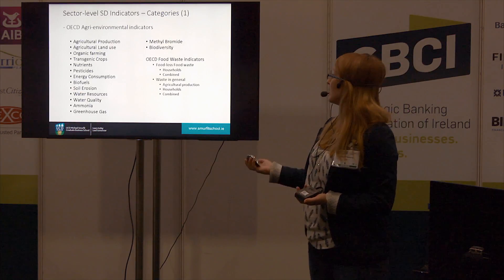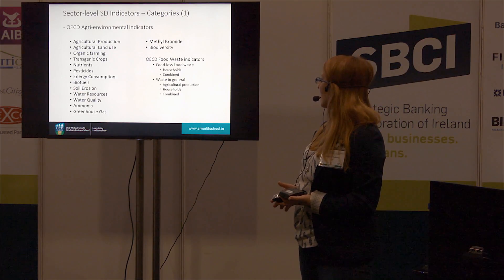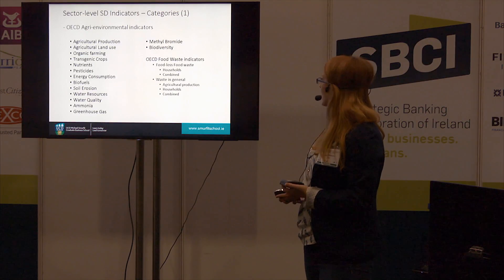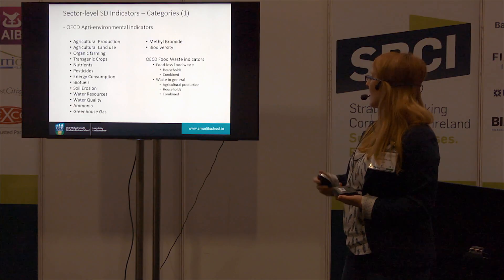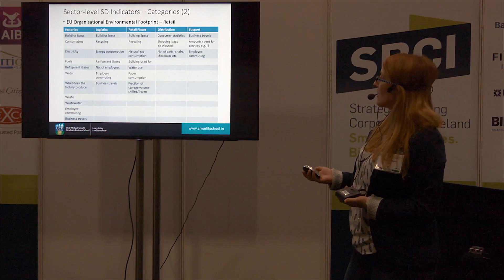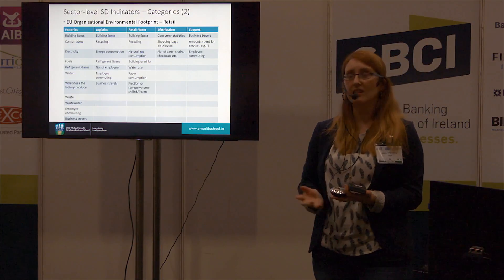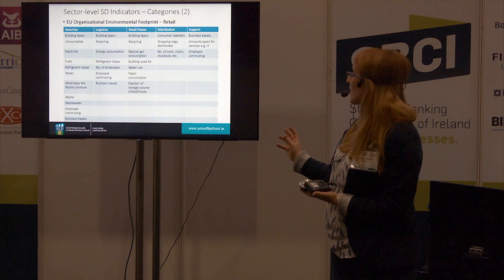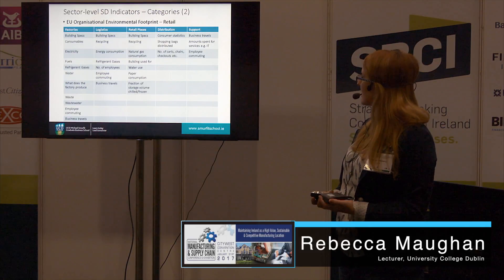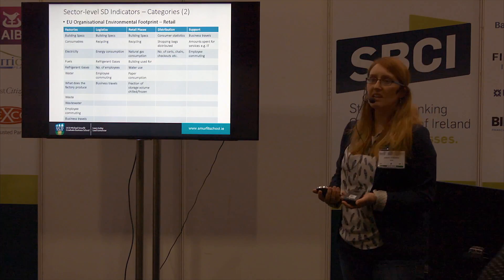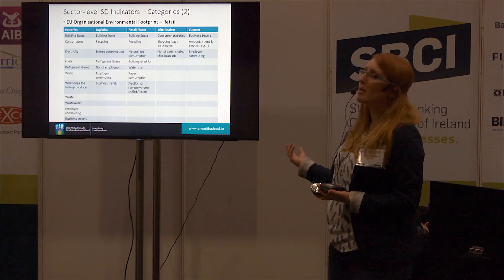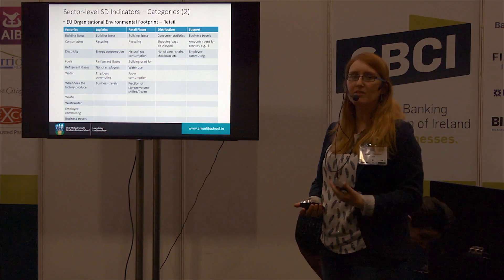For instance, the OECD agri-environmental indicators tell us about things like agricultural land use — how much is used for organic farming — pesticides, biodiversity, and greenhouse gas emissions. The food waste indicators tell us about food loss at household level and agricultural waste. The EU's organizational environmental footprint is really interesting because it gives sustainability indicators at all the various locations of the organization's business — in the factories, in the retail places — and it even goes into things like, if you're a big Tesco or a Musgrave, the number of shopping bags distributed every year and what type of material the shopping bags are made of. So these are really detailed indicators.